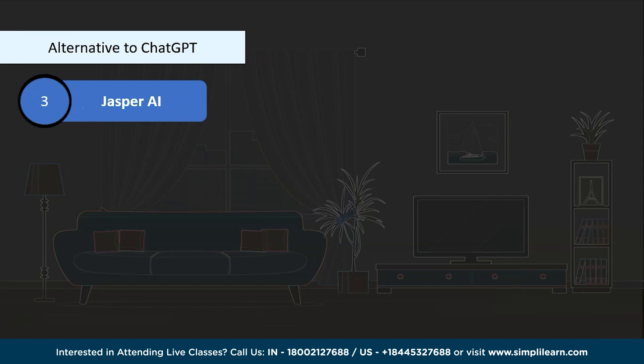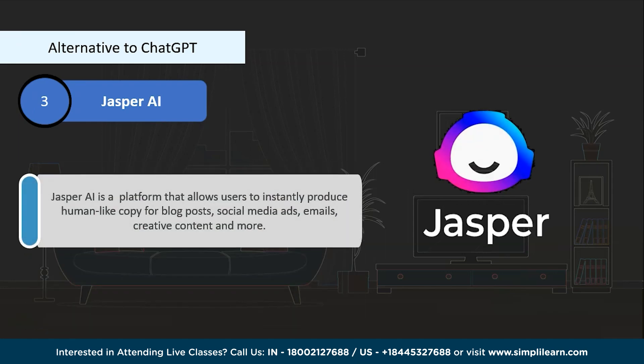Next on the list is Jasper AI — an AI-powered platform that provides personalized voice assistance and automation for businesses. It uses NLP and machine learning to understand and respond to customer queries and automate routine tasks like scheduling, customer support, and data entry. Jasper can integrate with various communication channels including phone, email, and messaging to suit the specific needs of a business. It aims to enhance customer experience, increase efficiency, and reduce costs.